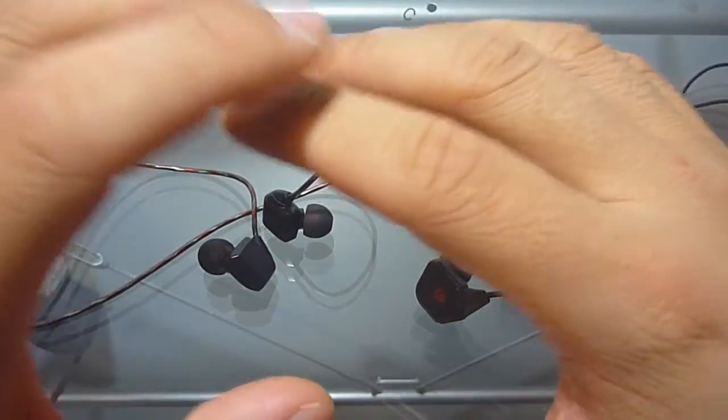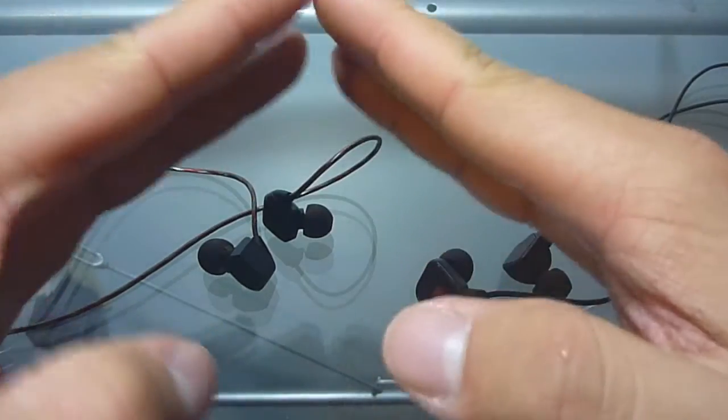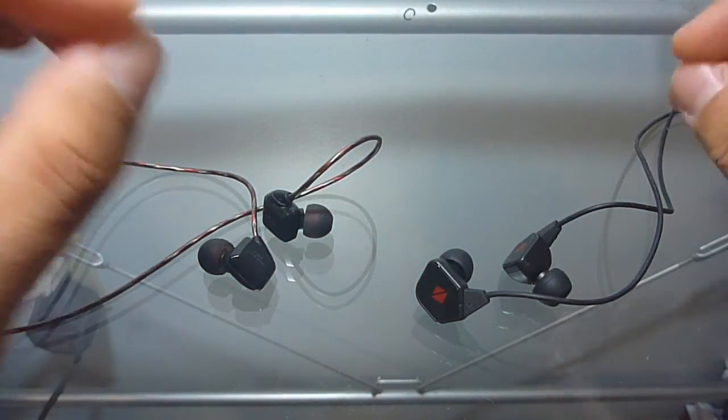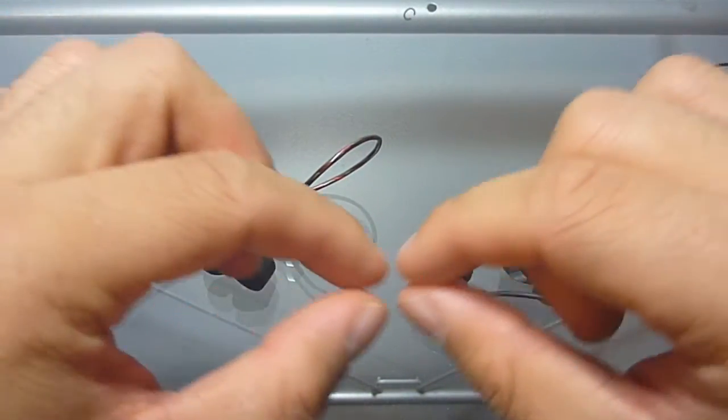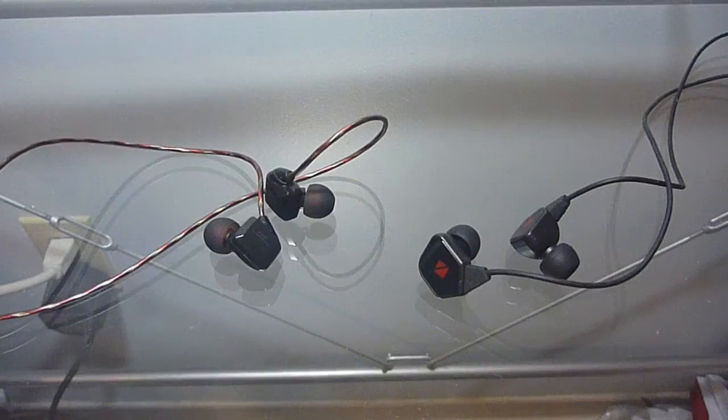That said, the GR07s are very, very good in terms of sound stage in its own right. It's definitely very wide and it definitely places instruments very well as well. But I think that at times it does sound a little diffuse overall compared to the Havi's.